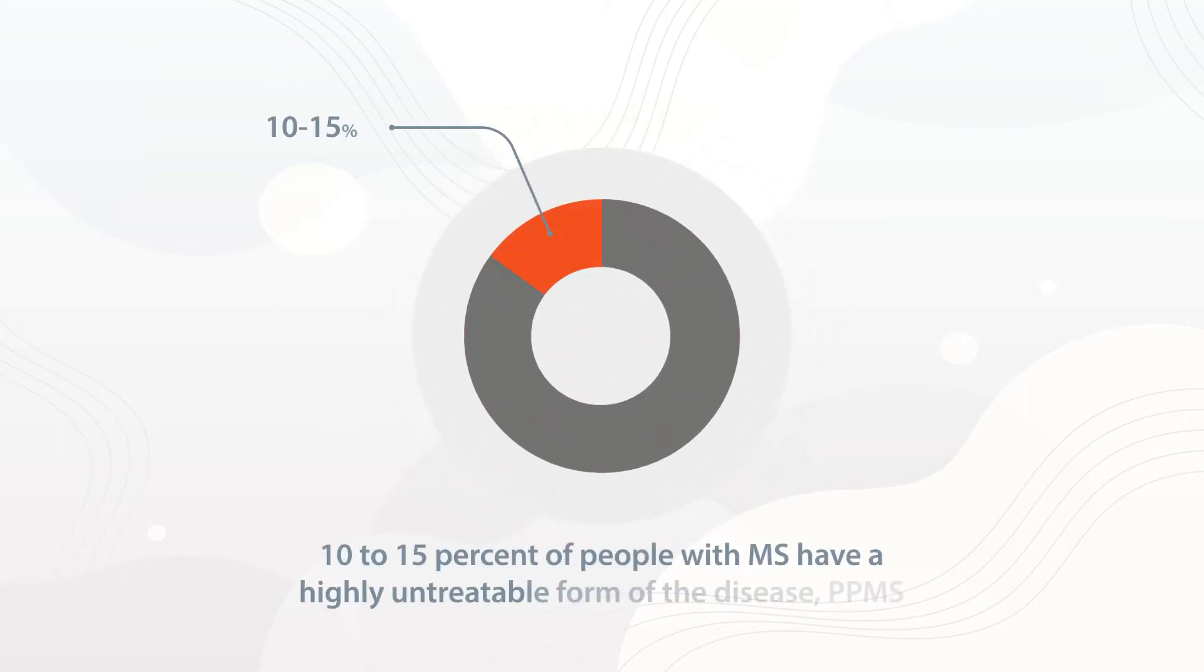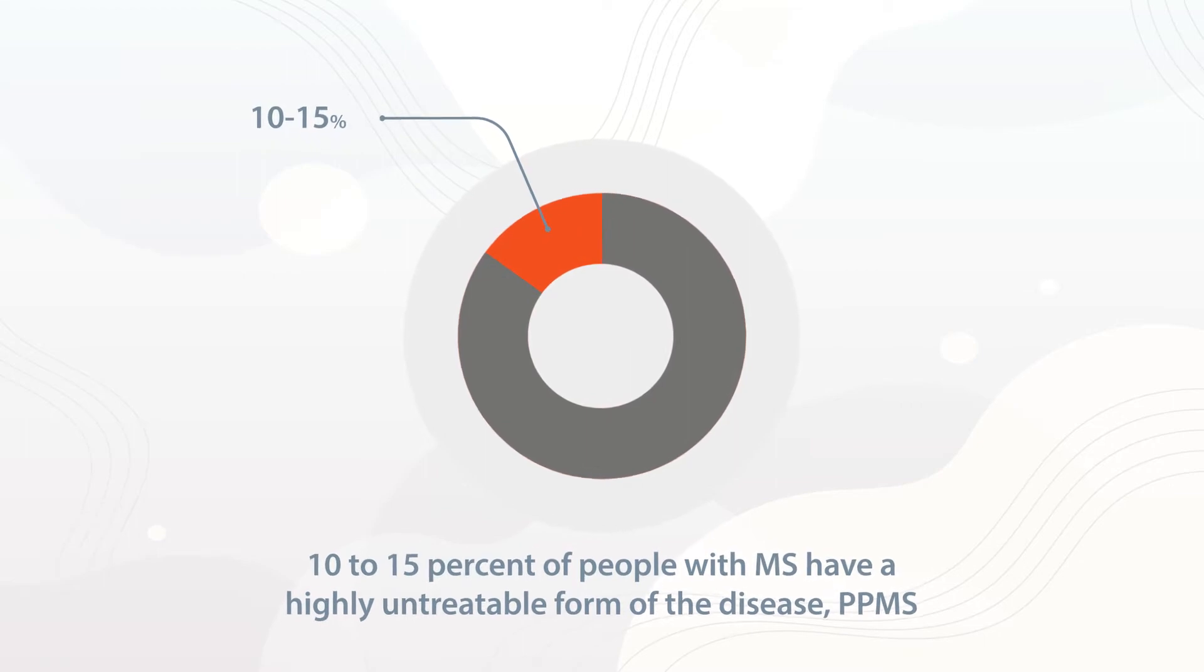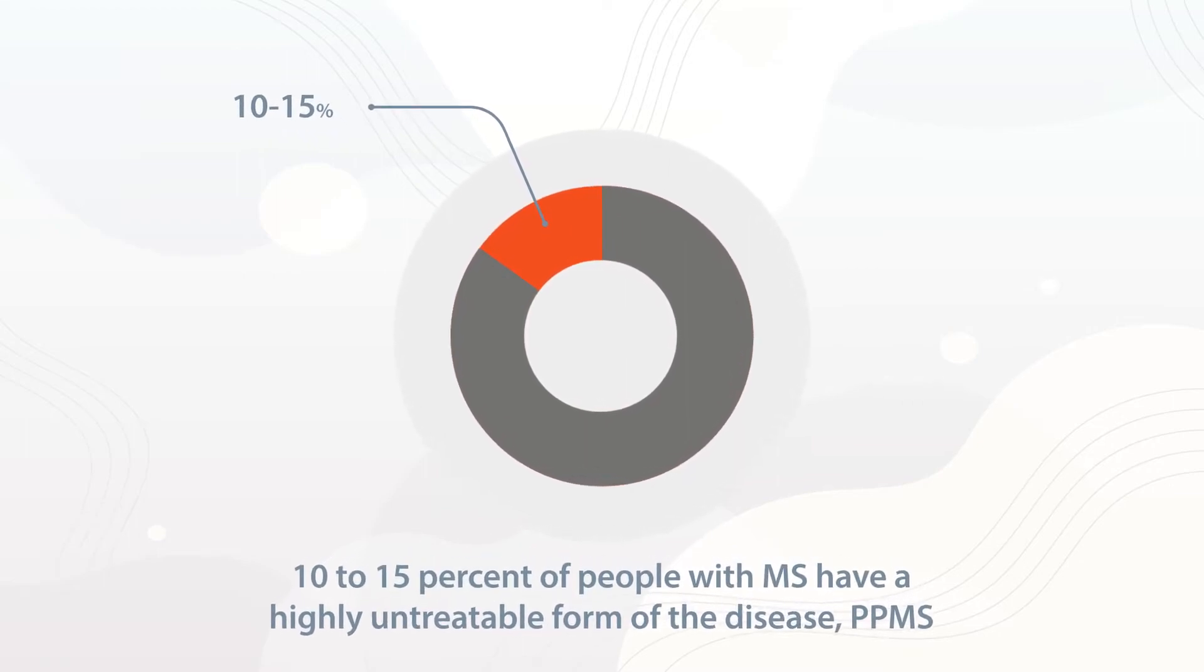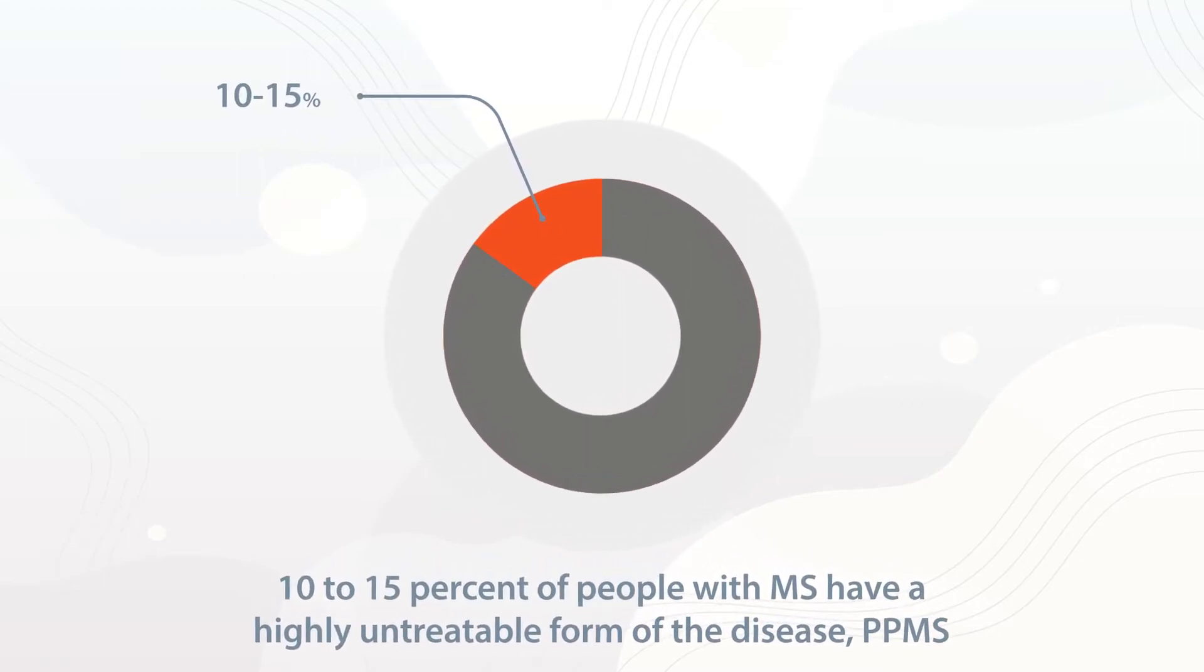10-15% of people with MS have a highly untreatable form of the disease, primary progressive MS.